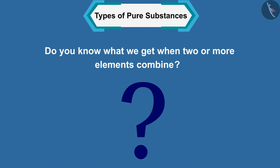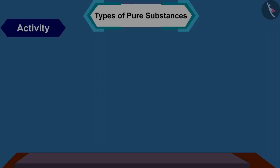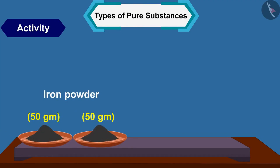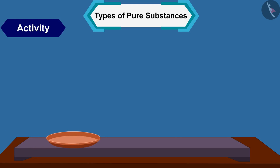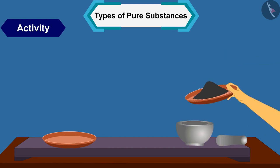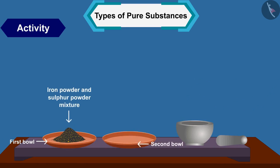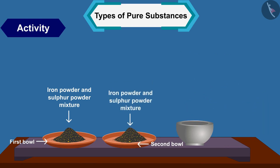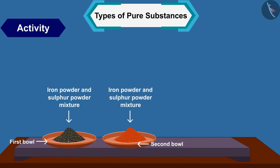Boron, silicon, germanium, etc. are examples of metalloids. Now, what do we get when two or more elements combine? Let us understand this by an activity. Take 50 grams of iron powder and 3 grams of sulfur in two separate ceramic cups. Mix iron powder and sulfur powder in the first bowl, and in the second bowl also mix iron powder and sulfur powder.